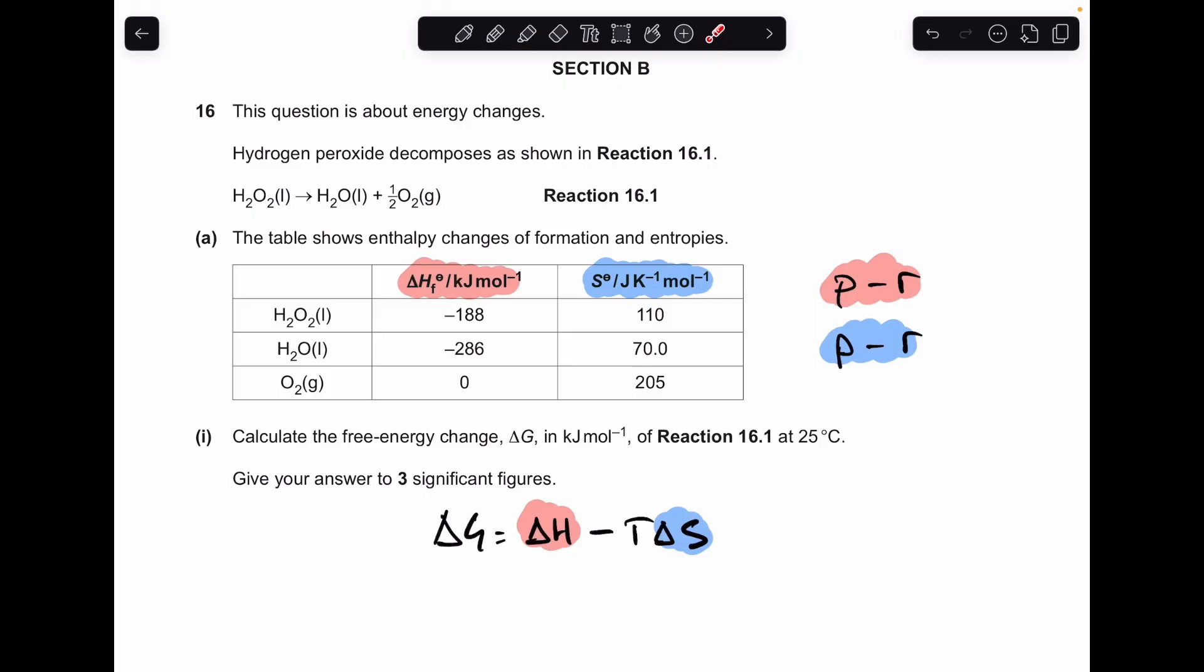And then for ΔS, we're going to use the entropy values. And again, it's products minus reactants. And that will give us our ΔS. And then we can work out ΔG from those.